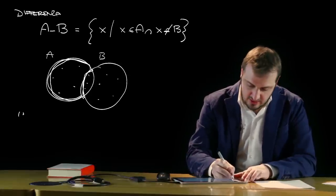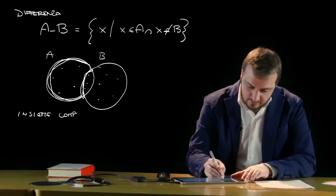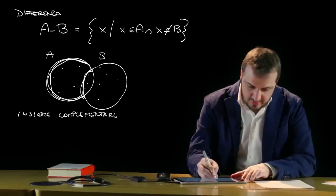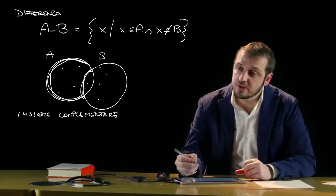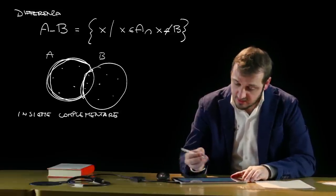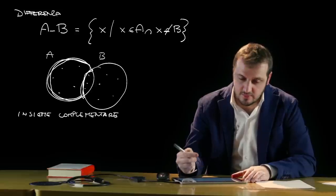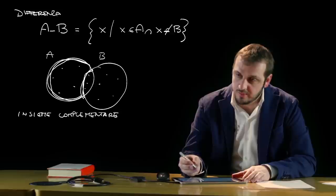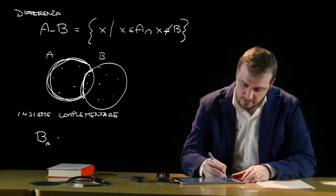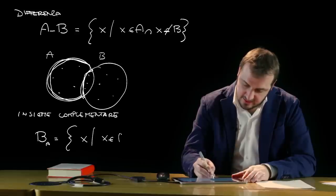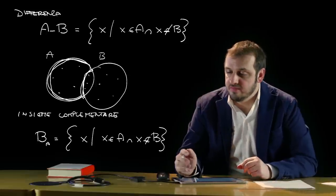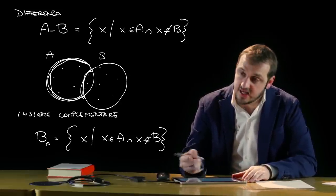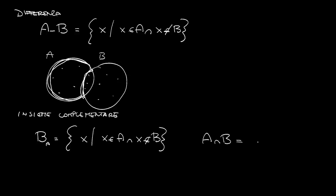L'insieme complementare di B rispetto ad A è l'insieme caratterizzato da tutti gli elementi di A che non appartengono a B. Nel caso in cui B sia un sotto-insieme strettamente incluso in A, vi è coincidenza tra l'insieme complementare di B rispetto ad A e l'insieme differenza A-B: gli x appartenenti ad A e non appartenenti a B. Gli insiemi disgiunti sono quegli insiemi la cui intersezione coincide con l'insieme vuoto, cioè insiemi che non hanno alcun elemento in comune.